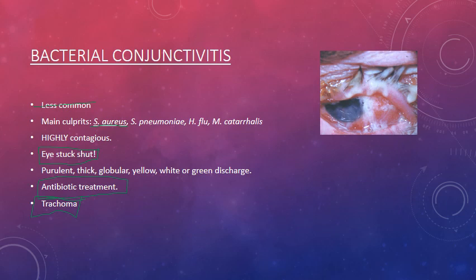So with conjunctivitis, you've got four types: allergic — basically IgE-mediated; bacterial; viral; and non-infectious non-allergic conjunctivitis from getting something in your eye. They each have different presentations based on their discharge and timeline, so keep those in mind. Thanks for watching.